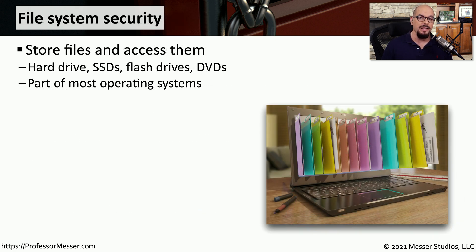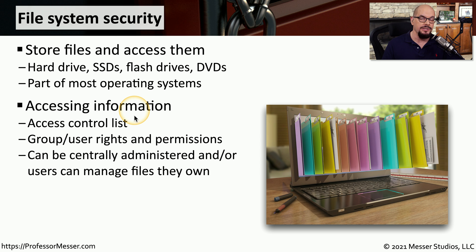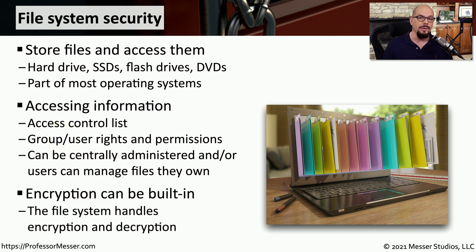There's also a great deal of access control built into the operating systems we use every day. When storing files on a hard drive, SSD, or flash drive, we need to define who has access to those files. We refer to this generically as an access control list, which in Windows is a list of users or groups with assigned permissions. This can be centrally managed through group policy, or managed by the object's owner. In the case of NTFS used by Microsoft Windows, the file system can also perform additional security such as encryption and decryption — built directly into the OS with no additional software required.